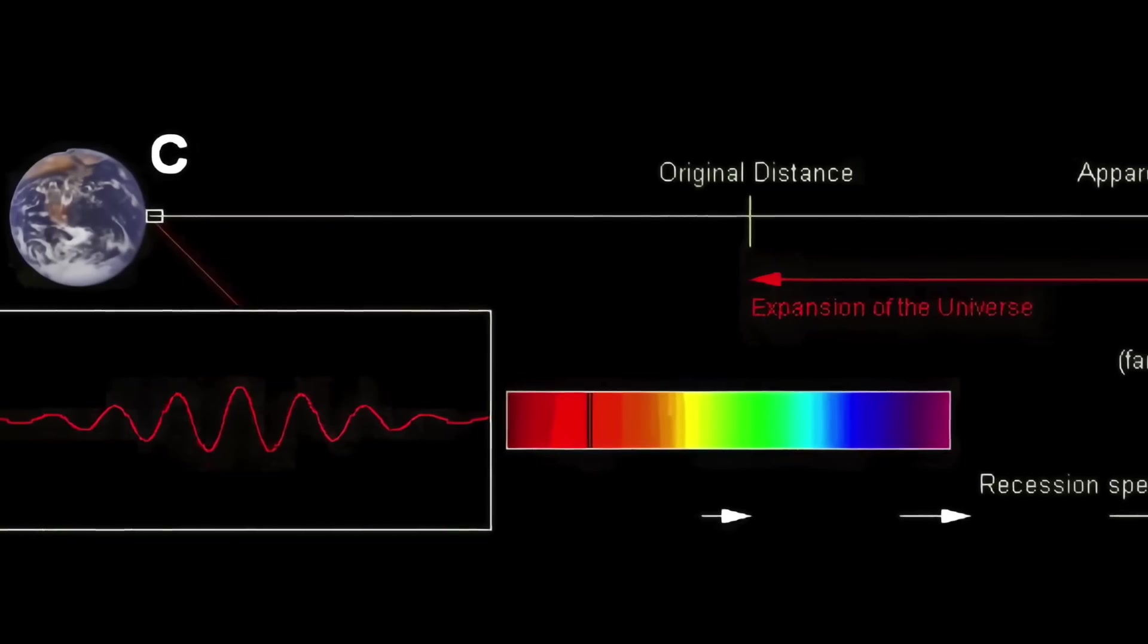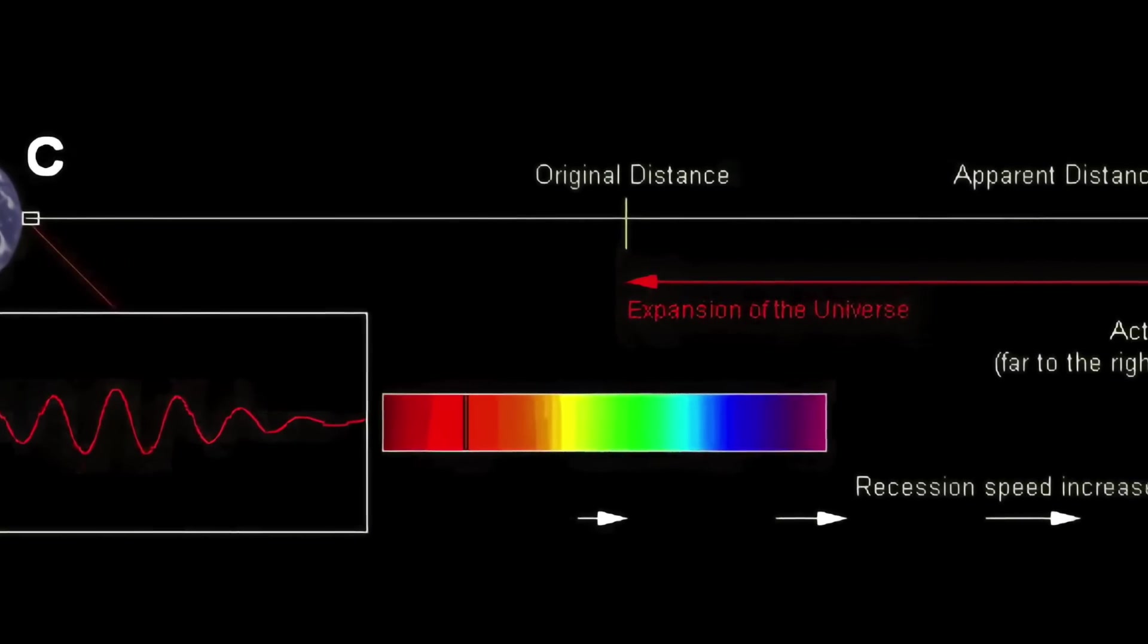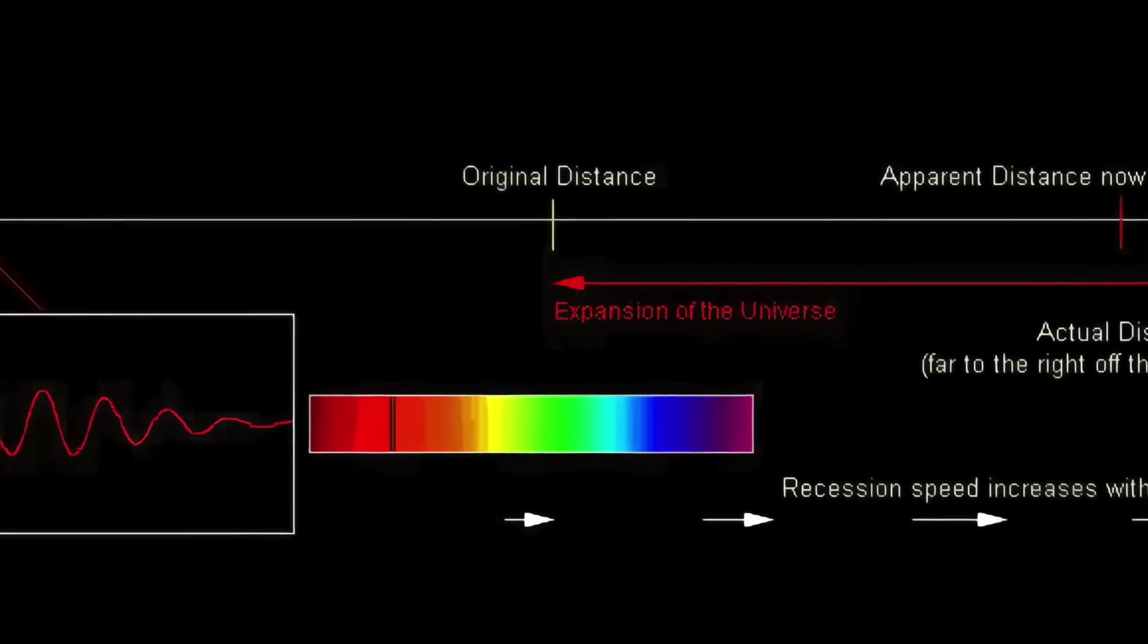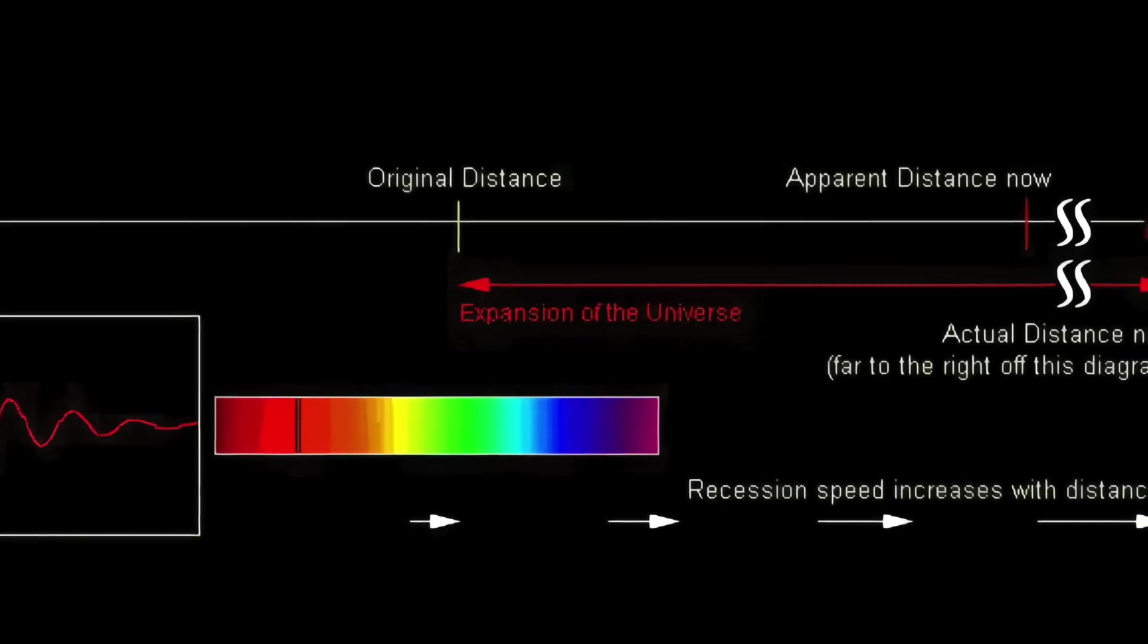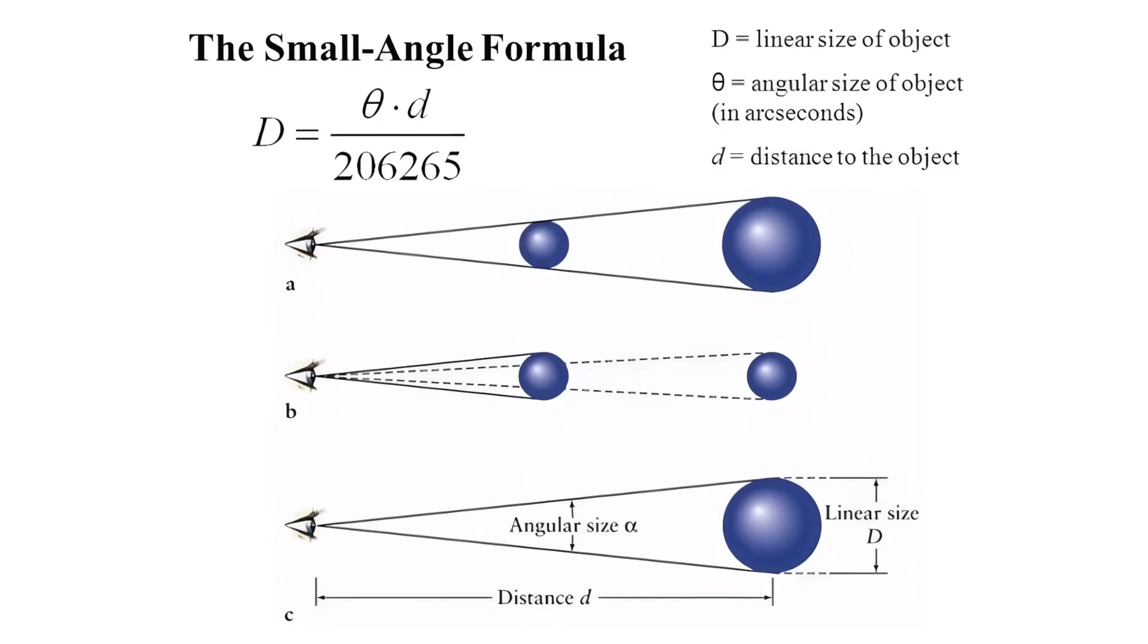In the time that the light has taken to travel the distance to our telescopes, the space through which the light has traveled had continued to expand, reddening that light and reducing the amount that arrives per unit time. This leads to the counterintuitive result that beyond a redshift of about 2, galaxies of the same size will appear larger, redder and fainter as their redshift increases.